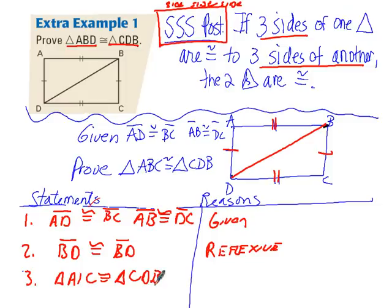And that would be by side, side, side. We've shown all three sides to be congruent in both triangles. Therefore, the triangles are congruent. Pretty straightforward.